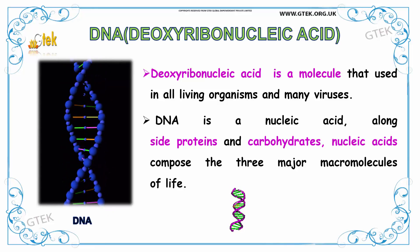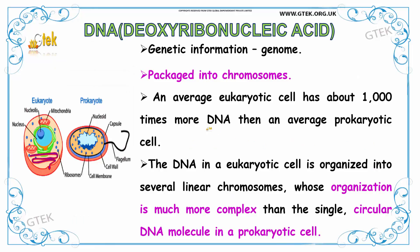You can see the DNA over here. Deoxyribonucleic acid gives the genetic information, i.e., the genome packaged into chromosomes. An average eukaryotic cell has about 1000 times more DNA than an average prokaryotic cell. The DNA in a eukaryotic cell is organized into several linear chromosomes, whose organization is much more complex than the single circular DNA molecule in a prokaryotic cell. You can see the circular DNA molecule of the prokaryote and complex organization of the eukaryotic cell over here.